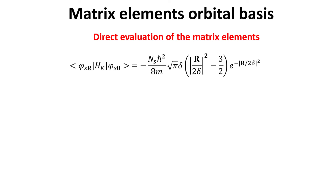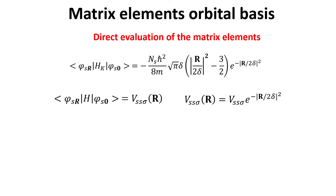This is expected from the fact that the orbitals are localized in space. Because the matrix elements are simply numbers, a common practice is to compute them once and for all for a given material. The matrix element is commonly denoted as v of r, with sub-indexes denoting the orbitals involved. Because the strongest dependence on r comes from the exponential factor, it is common practice to write these matrix elements as a numerical parameter v_ss-sigma times the exponential factor. The parameter v_ss-sigma is referred to as the Slater-Koster parameter.